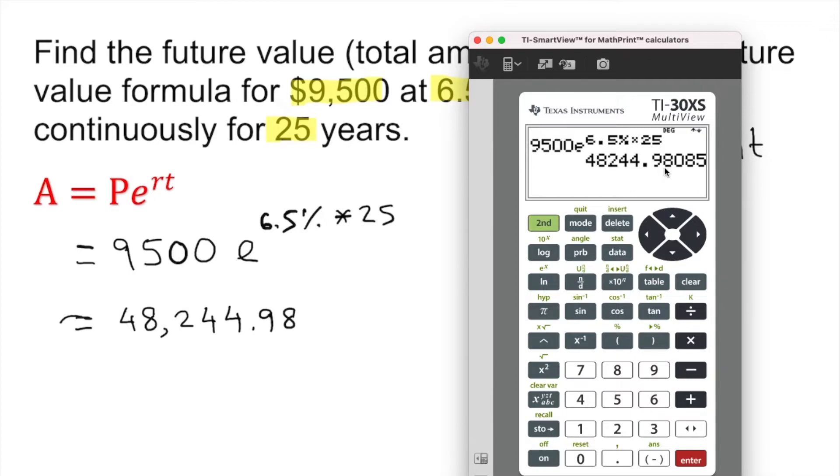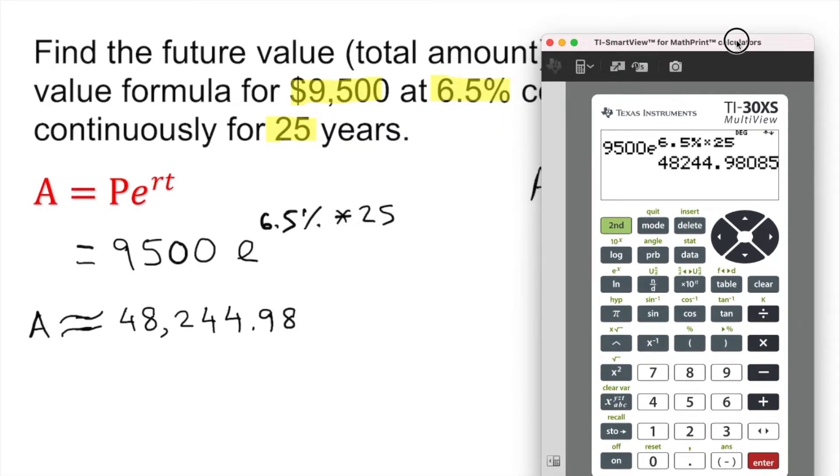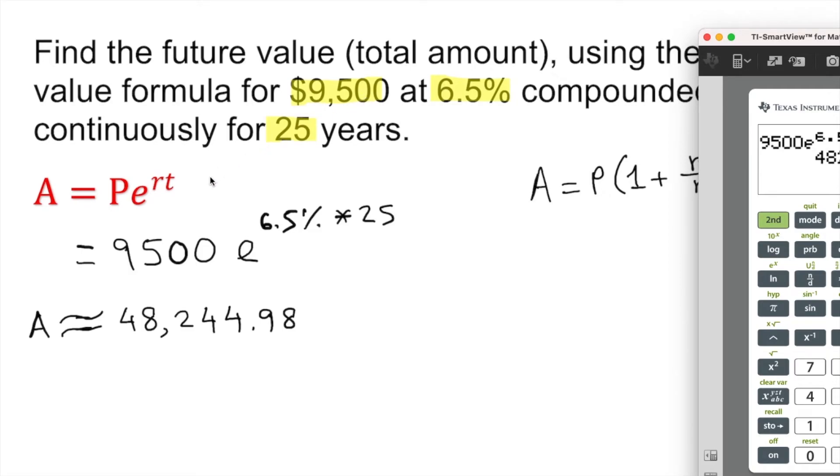Again, this is approximation. Approximately, the future value is going to be $48,244.98. So for 25 years, that $9,500 will grow to $48,244.98.